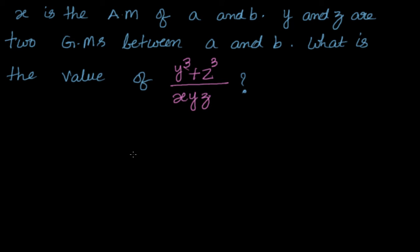Hello friends, welcome back. Let us look at this example related to arithmetic mean and geometric mean as part of sequences and series. We have been given that x is the AM of two numbers a and b. The meaning of x being the AM of a and b is that a, x, and b are in an arithmetic progression.